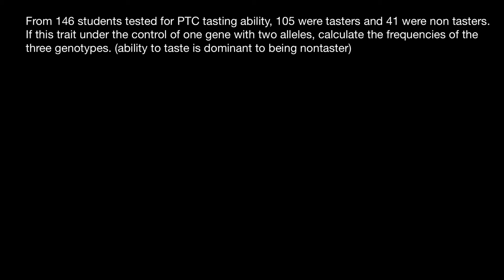We are going to use the Hardy-Weinberg formula to solve this problem. The frequency of three genotypes, given two alleles in the gene pool, is represented as p squared plus 2pq plus q squared, and all of this equals one, or 100 percent.